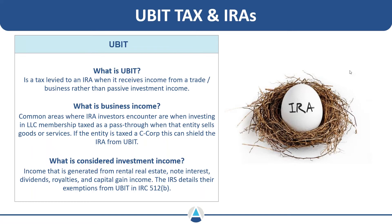If an IRA is the sole member of an LLC buying a piece of real estate and holding it for passive income, I would hesitate to say that is anywhere near active business income. However, if that same IRA invests into an LLC taxed as a pass-through that owns a coin laundromat, dry cleaner, convenience store, or road sign repair company — something that is an active trade or business with employees — then UBIT would apply.